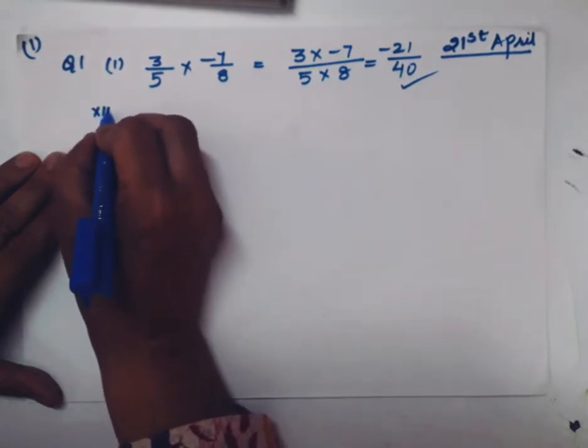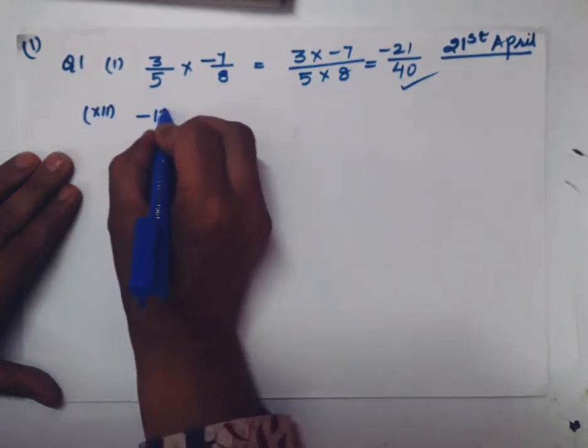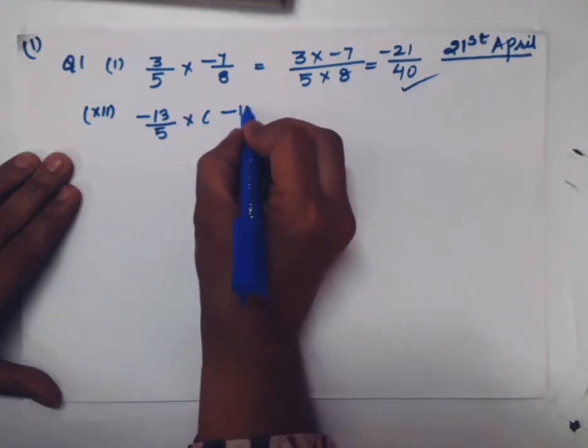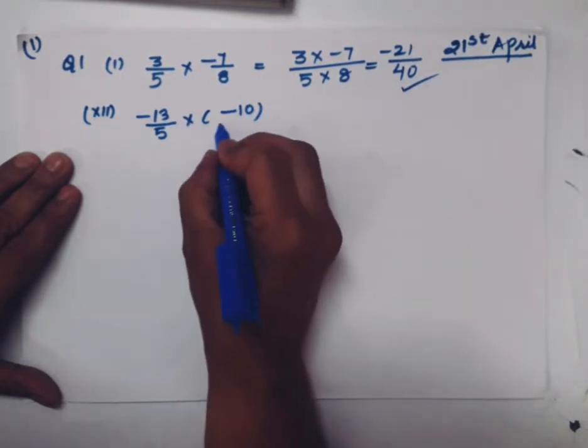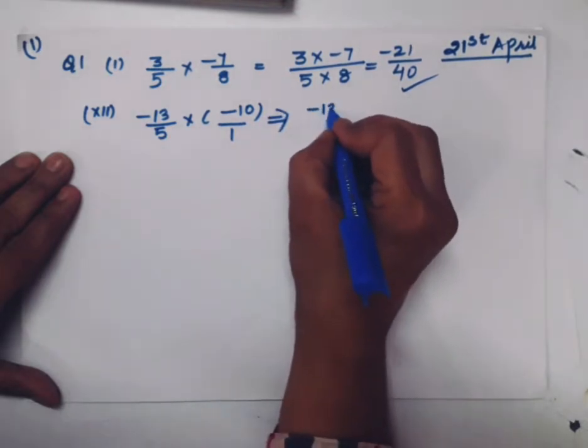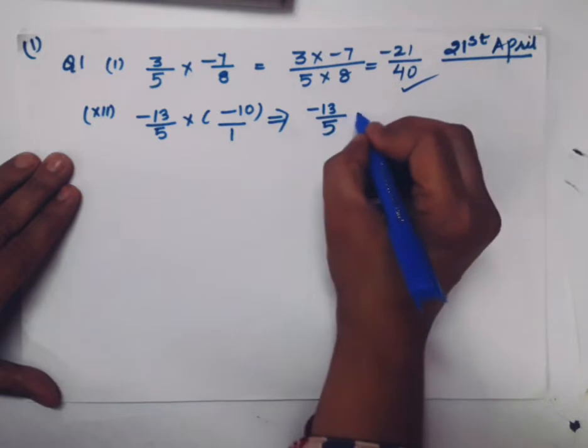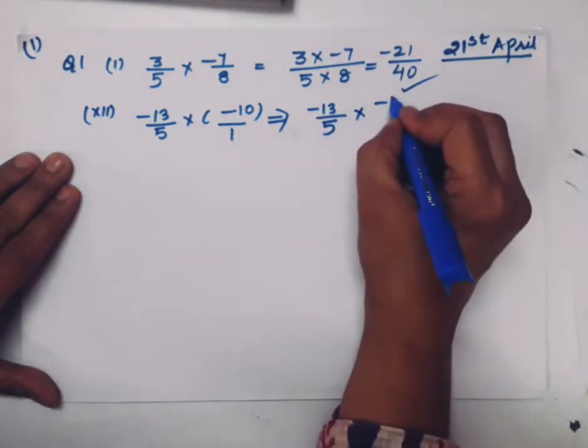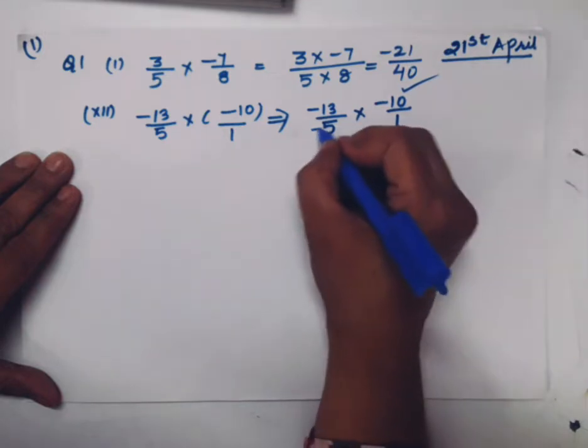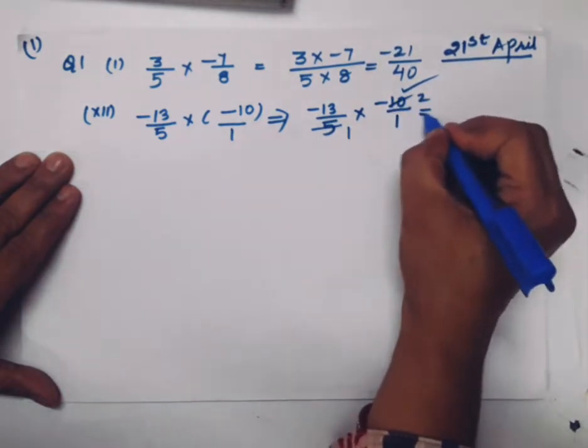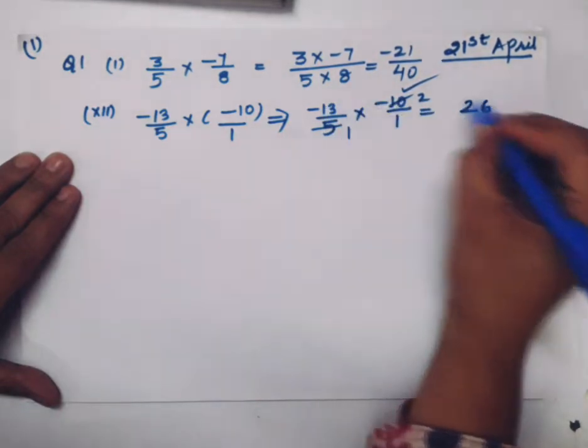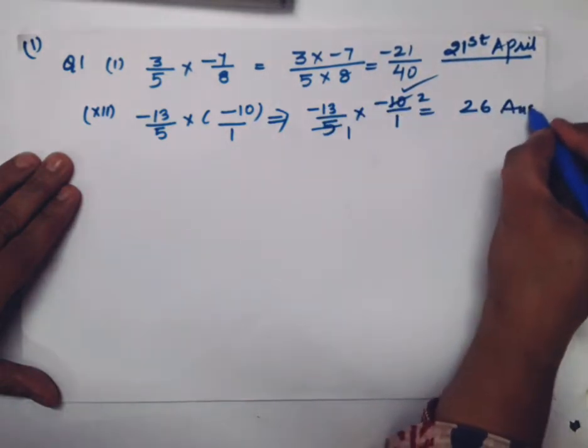One more part. Twelfth part. -13/5 × -10. Write 10 as 10/1. Is there any number which can be cancelled? Yes. 5 ones are 5, 5 twos are 10. So what should be the answer? 13 twos are 26, and minus minus is plus. 26 is your answer.